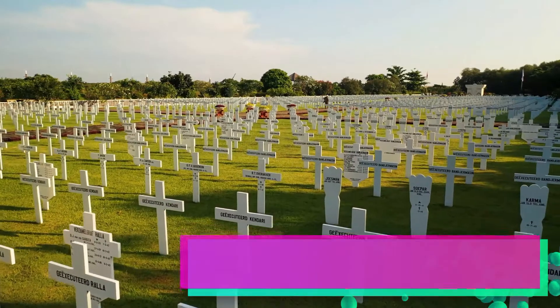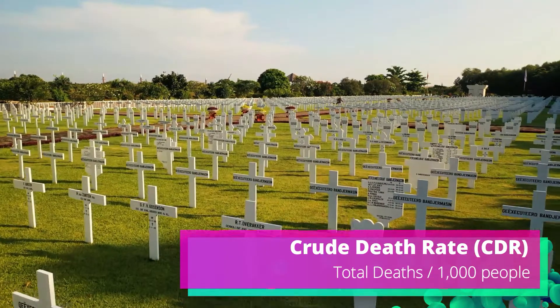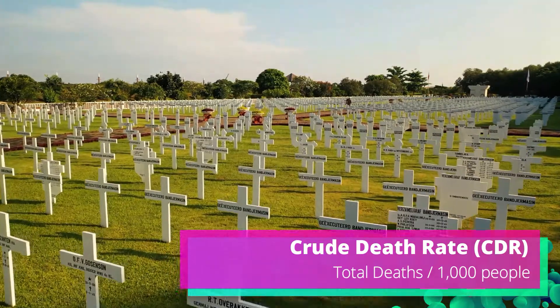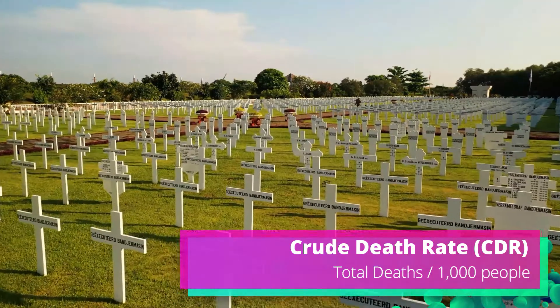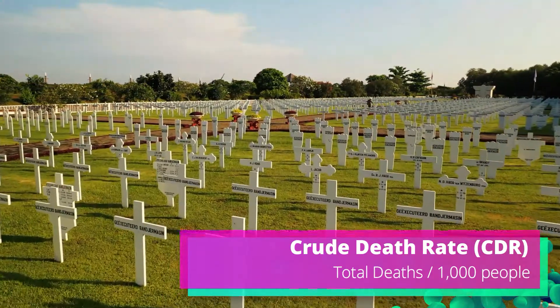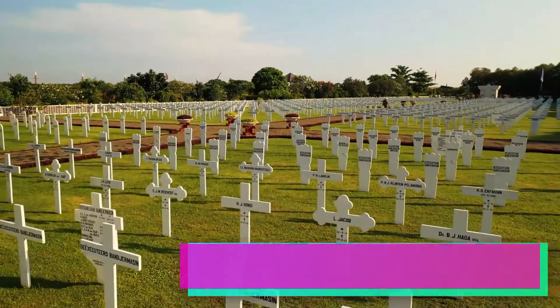We also have our crude death rate or CDR and you can probably guess it deals with how many people are dying in a year. And just like our CBR we're going to calculate it pretty similar. We're going to take the amount of people who died in a given year and divide it by a thousand people.